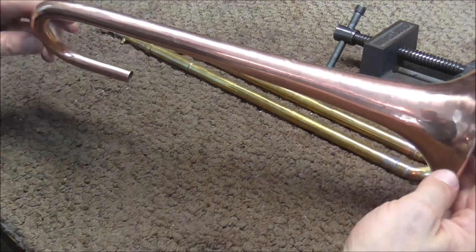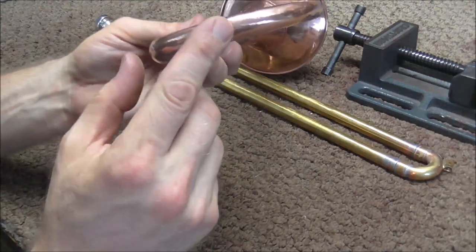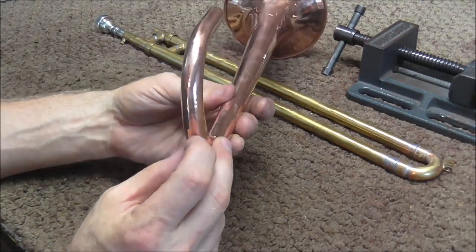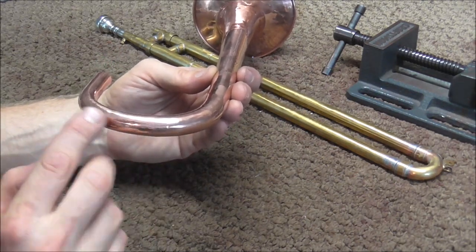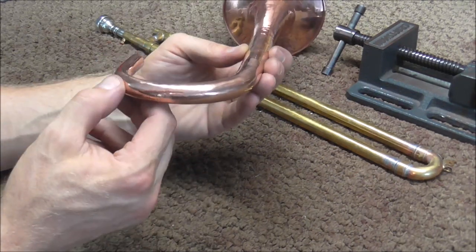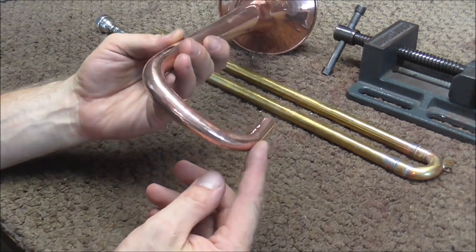Here's the bell. I got all of the lacquer buffed off of it. And also there were some dents that were in the bow. And if you remember from previous videos, they were pretty bad dents. Once you get dents out, buffing them can help smooth them out a little bit. And you can still tell that there were dents in there, but they're a lot better than they were.